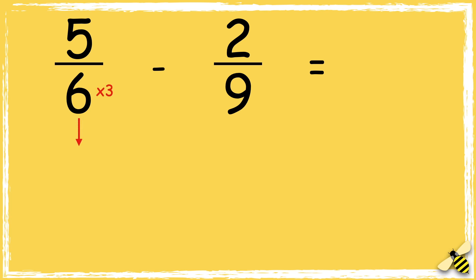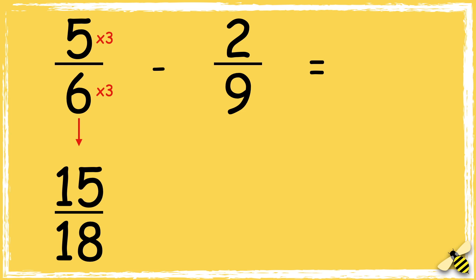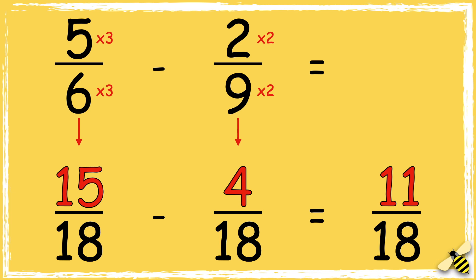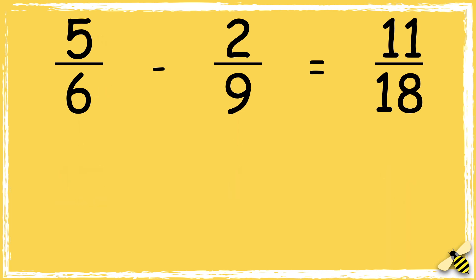We need to multiply 6 by 3 to make 18, so we also need to multiply the numerator by 3. 5 times 3 is 15. Now I need to multiply 9 by 2 to get 18, so we also need to multiply the numerator by 2. 2 times 2 is 4. Now that our denominators are the same, we can subtract the numerators. 15 take away 4 is 11, so the answer is 11/18.